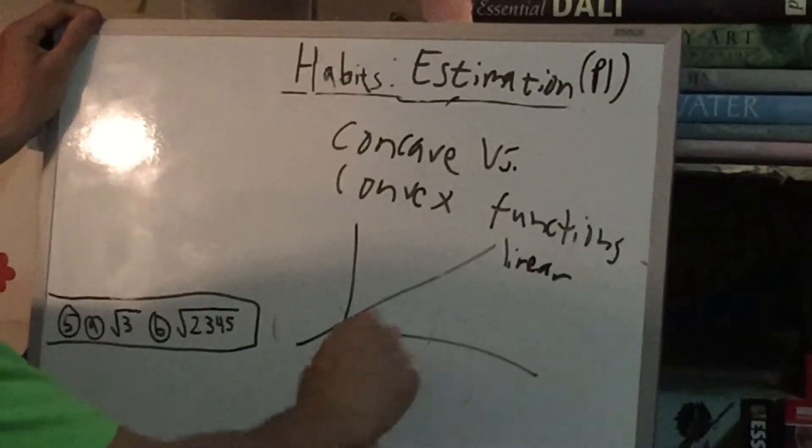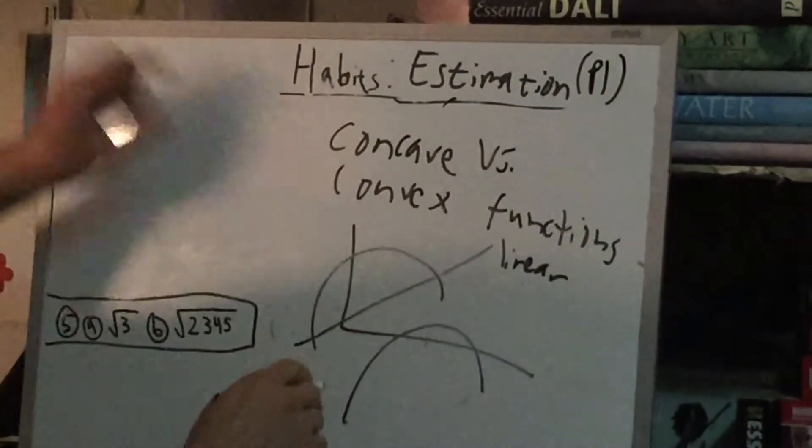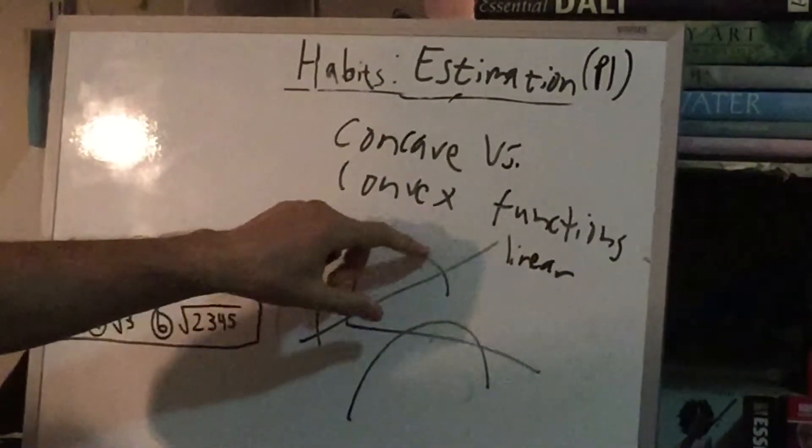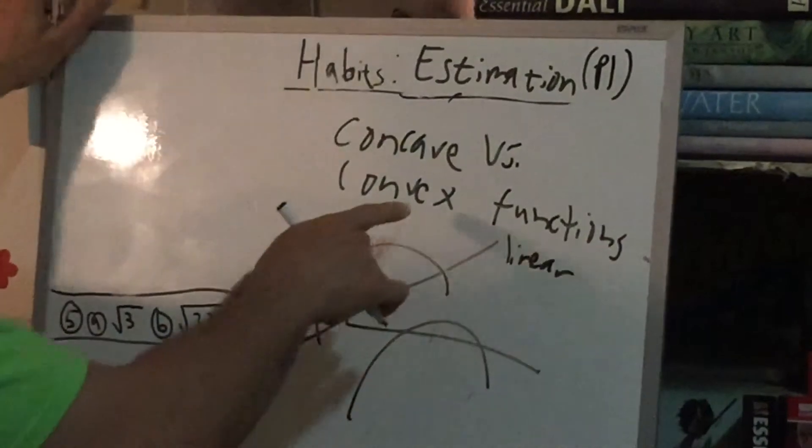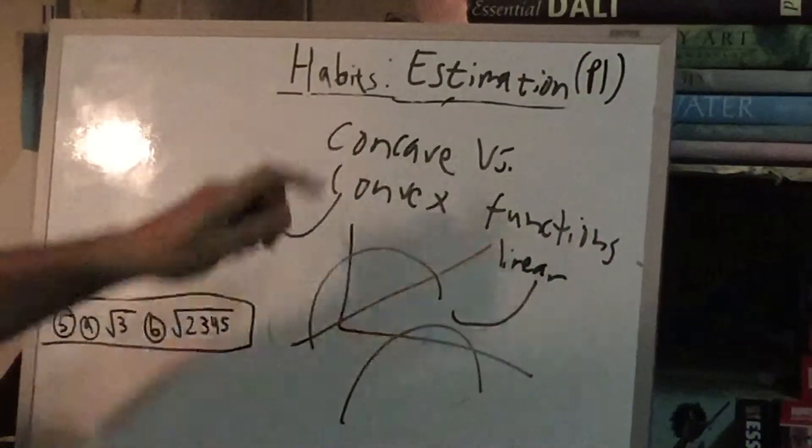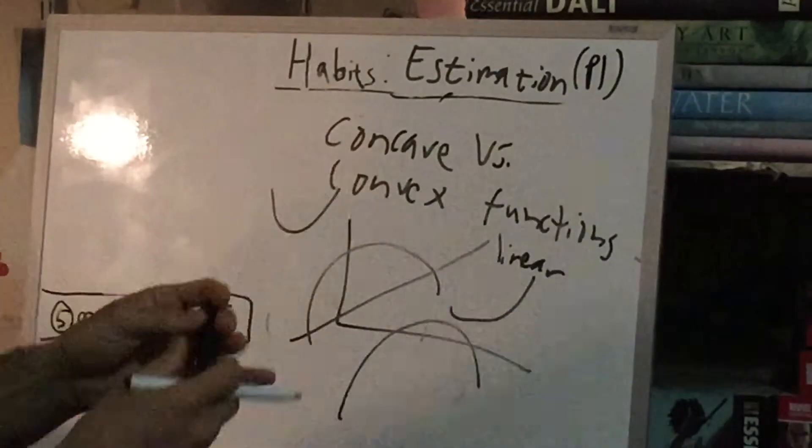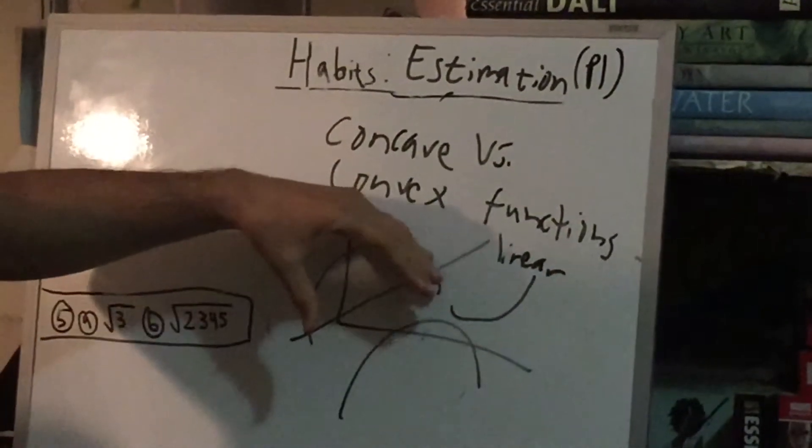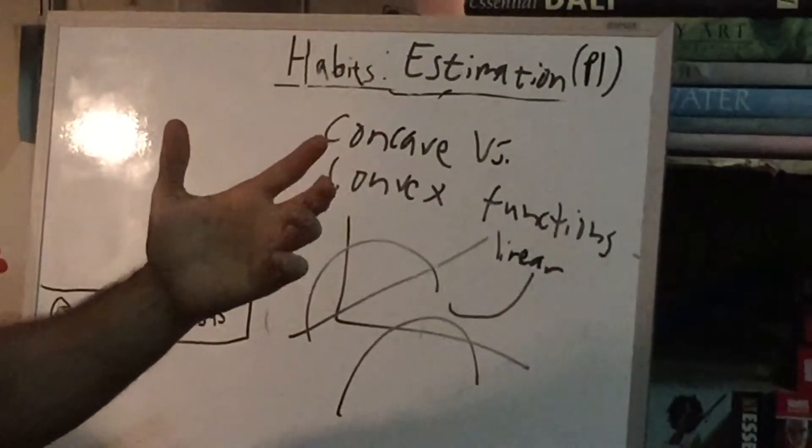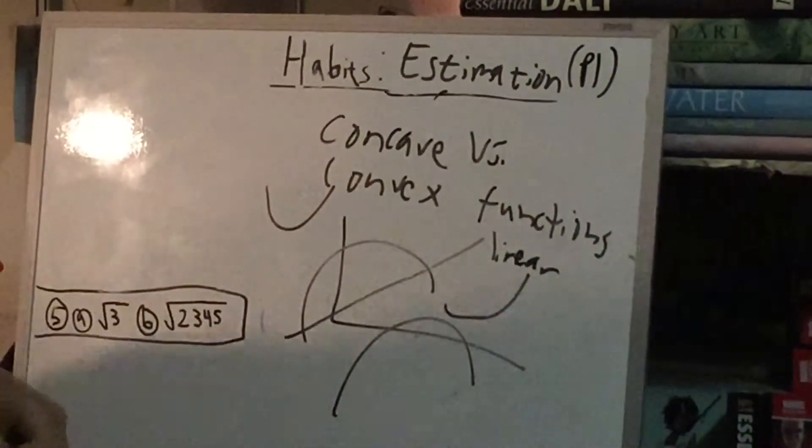Anything that goes this way, we're going to refer to as concave. It looks sort of like a cave. And anything that's convex is going to go the other way. Now, I think of it as c comes before v, and c tends to sort of fall, whereas v tends to open. c comes before v in the alphabet, so that's how I remember it.